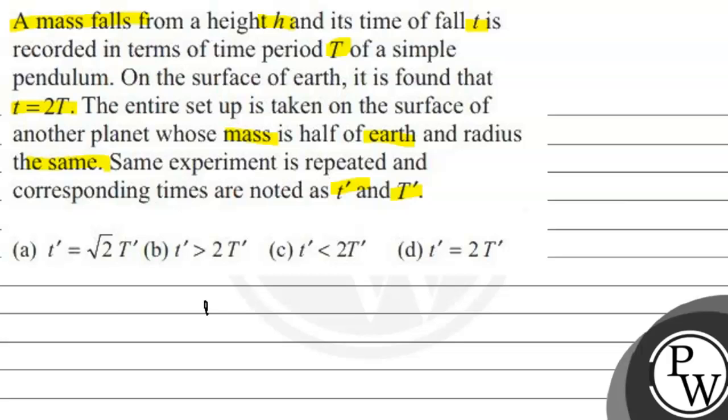What I would clarify: small t is the time of fall when a mass is released from height h. Capital T is the time period of a simple pendulum.